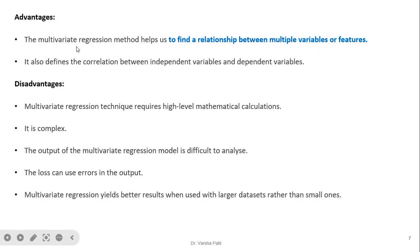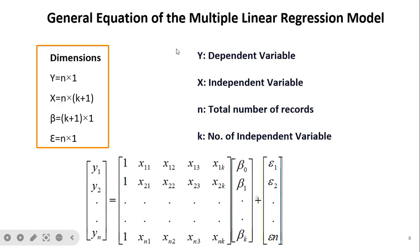Advantage: The multivariate regression method helps us find a complex relationship between multiple independent and dependent variables, and defines a correlation between them. Disadvantage: It requires a high level of mathematical calculation and is difficult to analyze. Also, multivariate regression yields better results when used with large datasets, so data availability is important. To understand multivariate linear regression, you should know the detailed concept of multiple linear regression, because multivariate is only a variation of multiple linear regression.